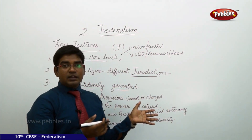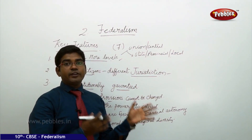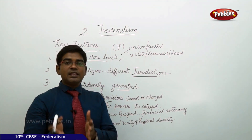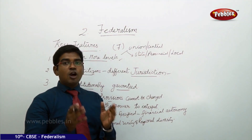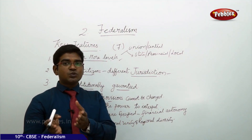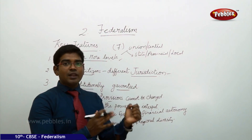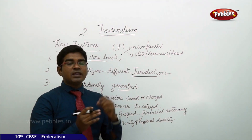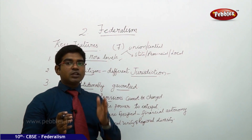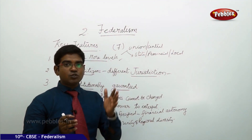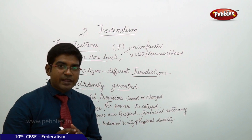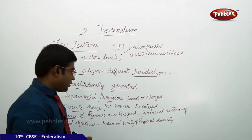The sources of revenue are clearly specified for both levels of government, which provides financial autonomy for the respective governments. The union government cannot block any funds being released for the state governments. State governments are independent to take actions on subjects under their purview, and union governments cannot pressurize state governments or block financial resources allotted to the states through sources of revenue.